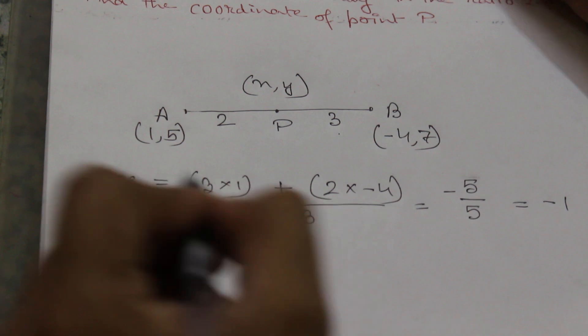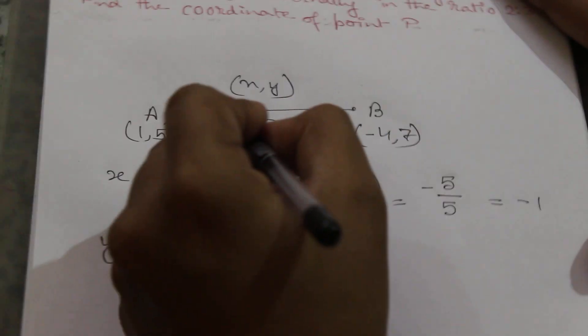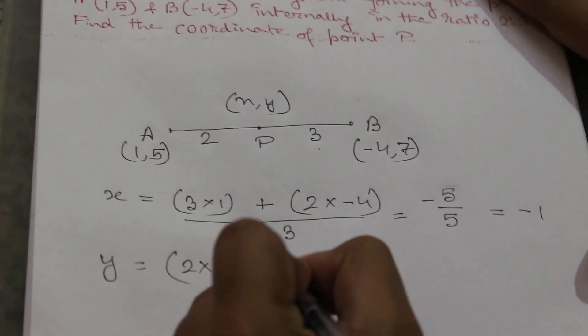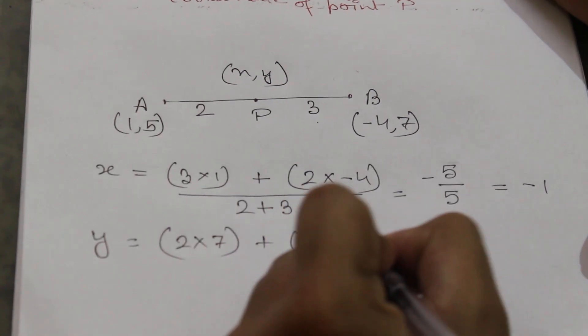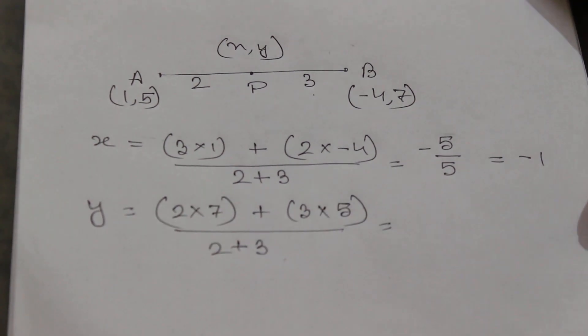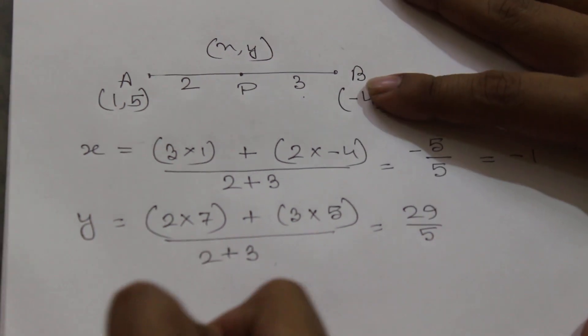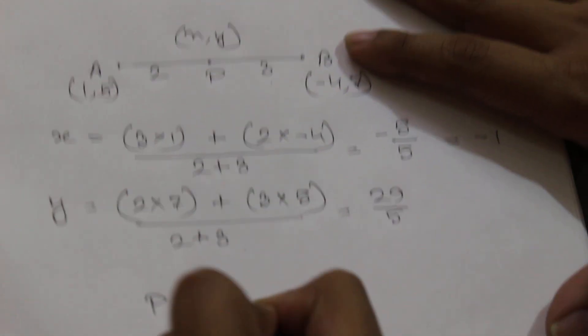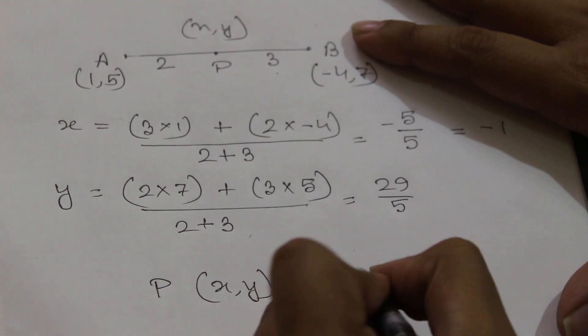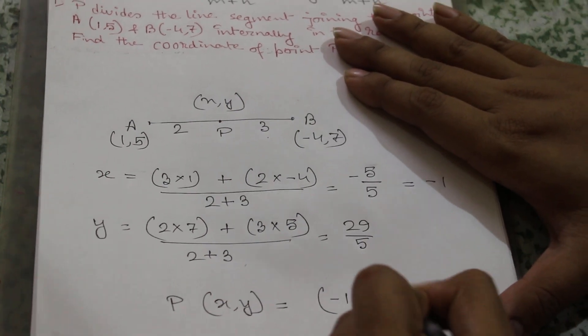And y will be equal to 2 into 7 plus 3 into 5 by 2 plus 3, which will be equal to 29 by 5. So the coordinate of point P is equal to (-1, 29/5). Understood?